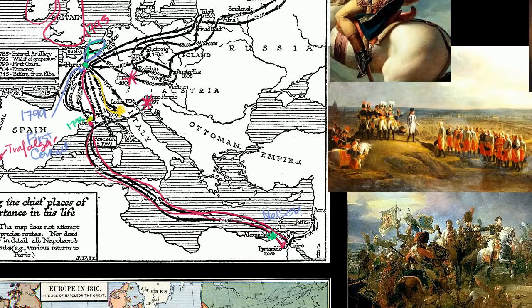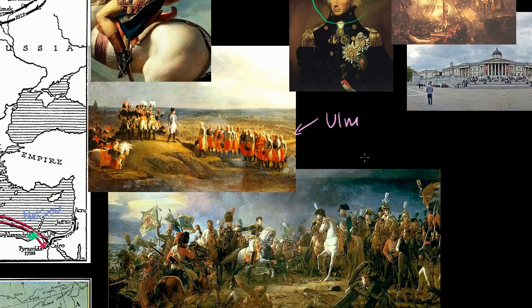Once again, Napoleon routed them at Austerlitz. There's always a debate — some of it might have been tactical genius, some pure luck. But after routing them at Austerlitz, taking so many casualties and prisoners from the enemy without incurring as many themselves, this really was the high point in terms of a battle for Napoleon. Austerlitz convinced Napoleon that he is truly a military genius — it was such a rout that he started to imagine himself on some level invincible.